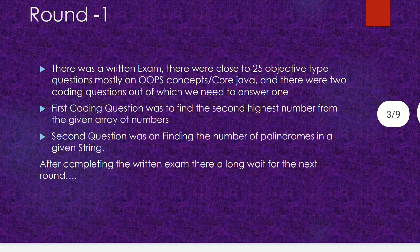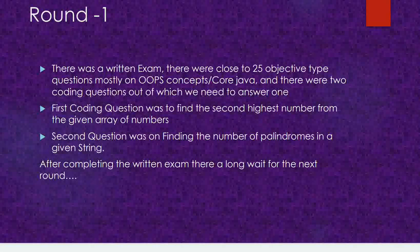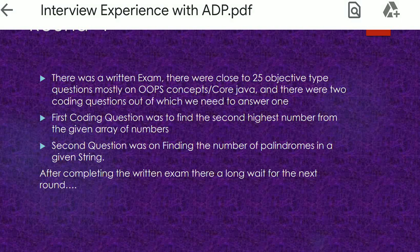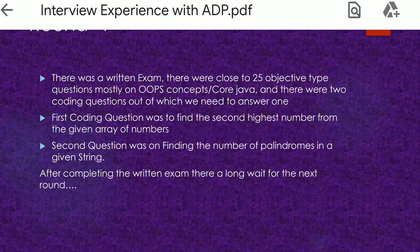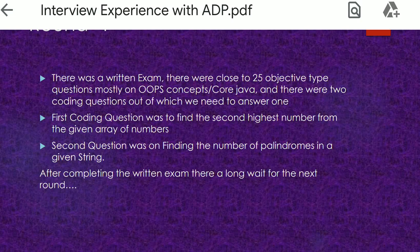In Round One, there was a written exam with close to 25 objective questions on core Java concepts, and two coding questions out of which you need to answer. When I attended the ADP interview, I also encountered similar questions. The first coding question was to find the highest or second highest number from a given array of numbers, testing your coding speed and how you handle duplicates.